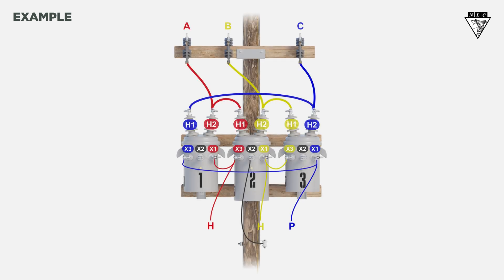Let's say you're a troubleman called to a service where a customer has lost power. While inspecting the delta delta bank, you notice the cutout to transformer 1 is open. After further inspection and testing, you determine that transformer 1 is no longer usable, so you request a replacement transformer.